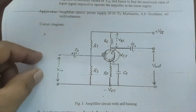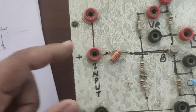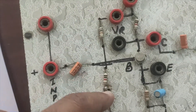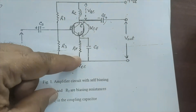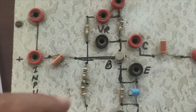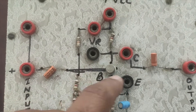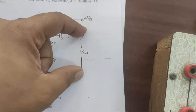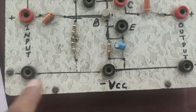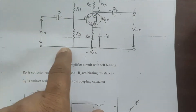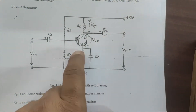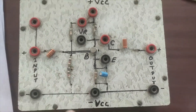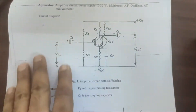Looking at the circuit, we have an input terminal, a capacitor, two resistances, and a transistor with base, collector, and emitter terminals. There is also a resistance, a capacitance at the output, plus VCC and minus VCC (grounded). This is an RC coupled amplifier circuit.